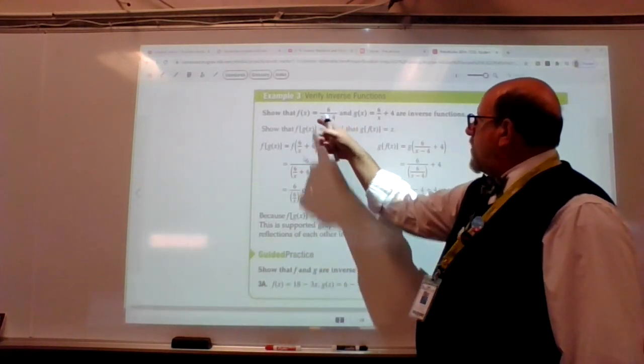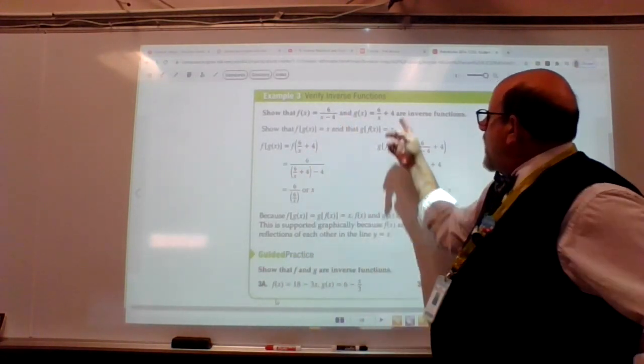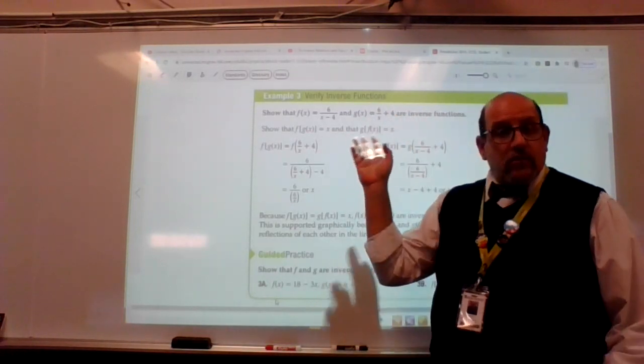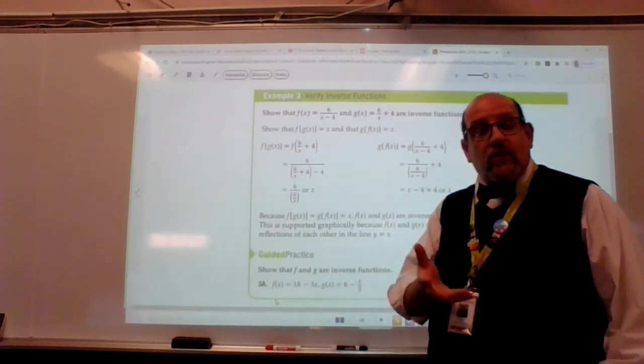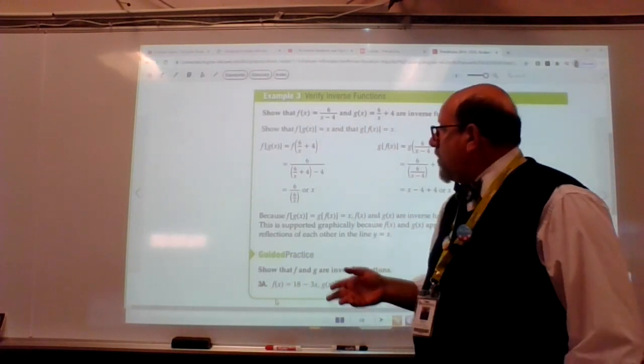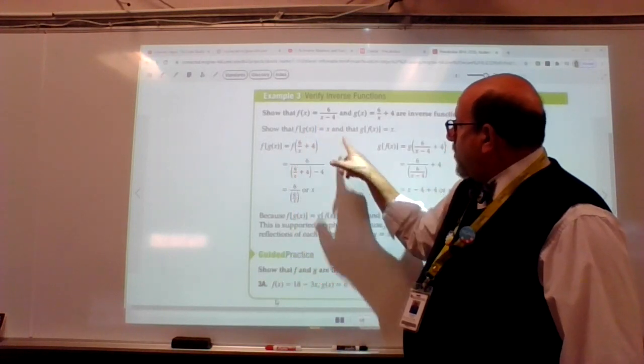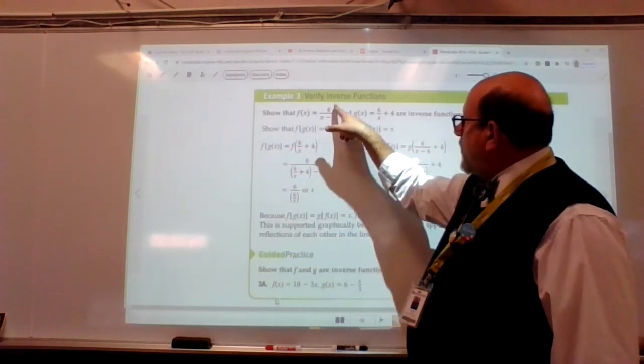So we have 6 over x minus 4, and we have 6 over x plus 4. They look pretty similar. They look like they could be inverses of one another. So let's go ahead and input that for x. We're going to input 6 over x plus 4. And then we have 6.